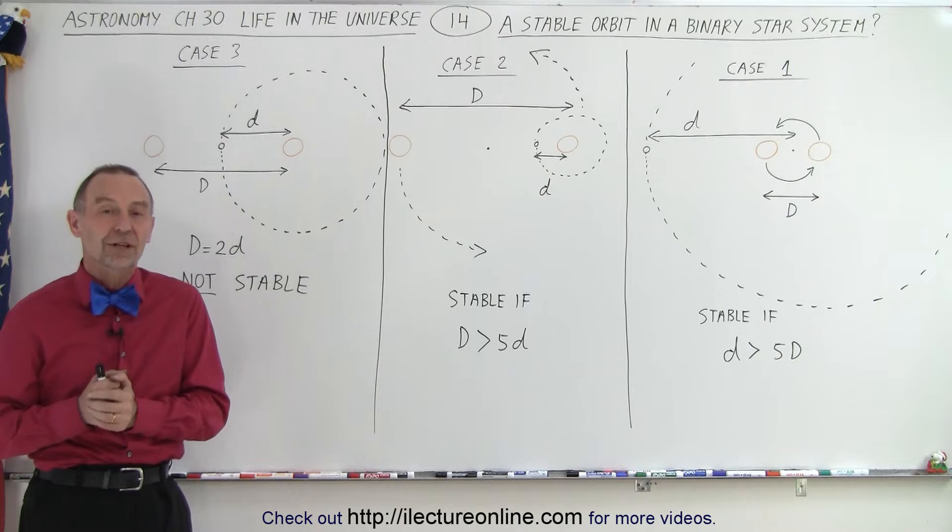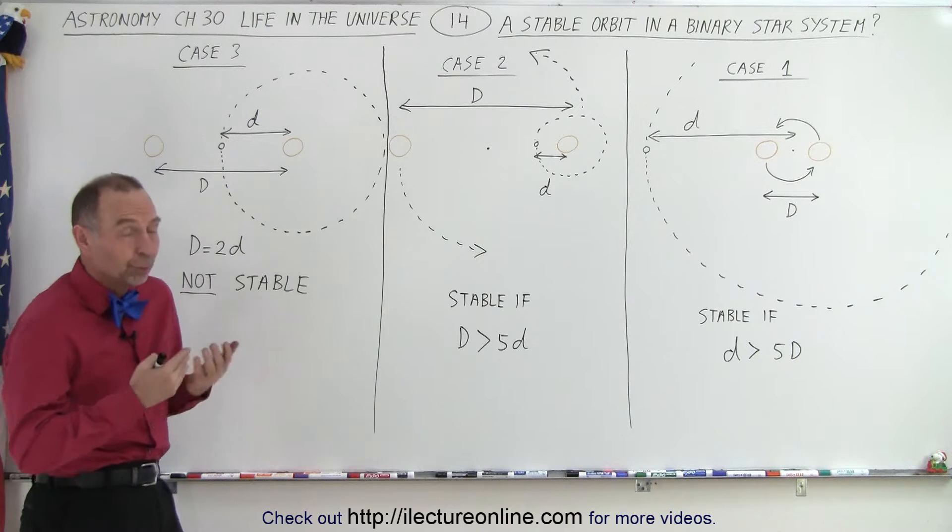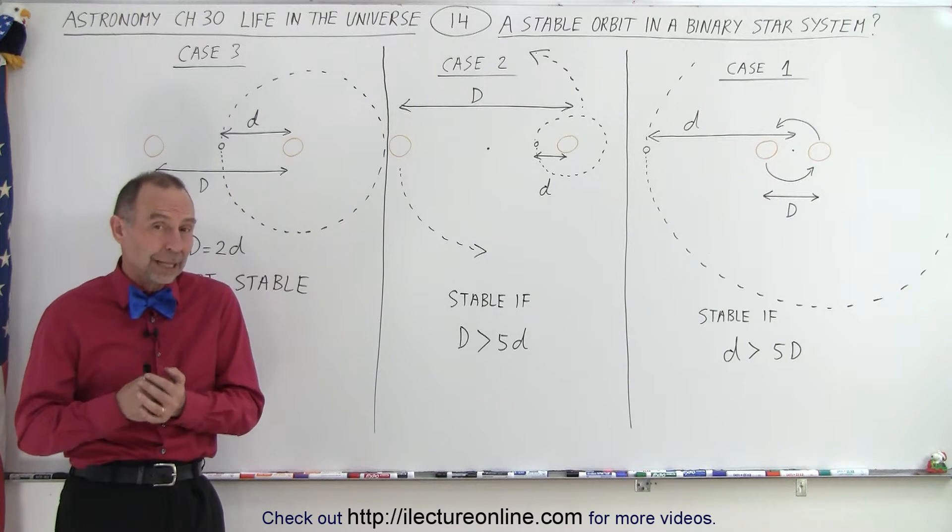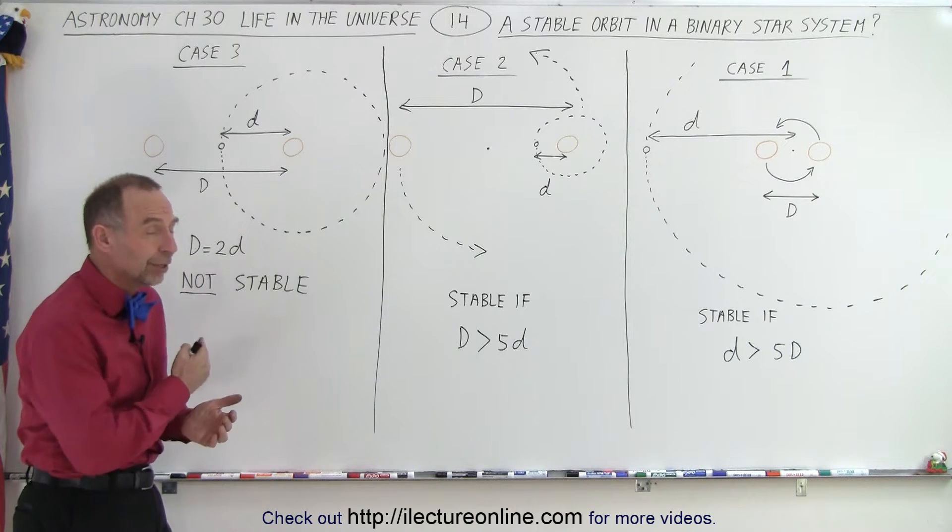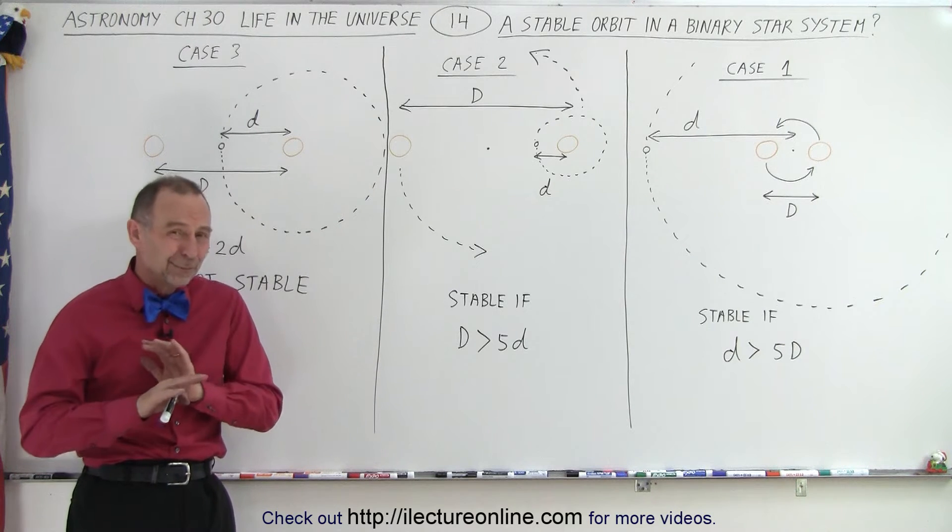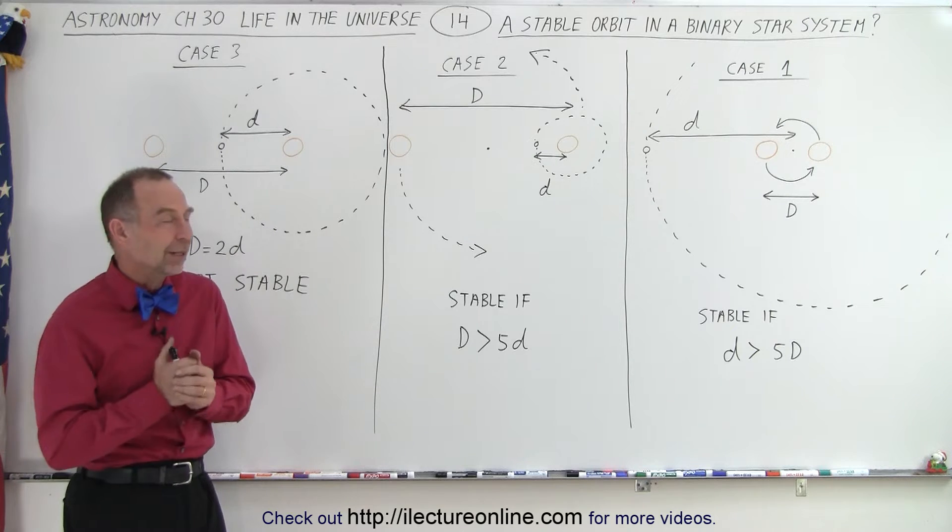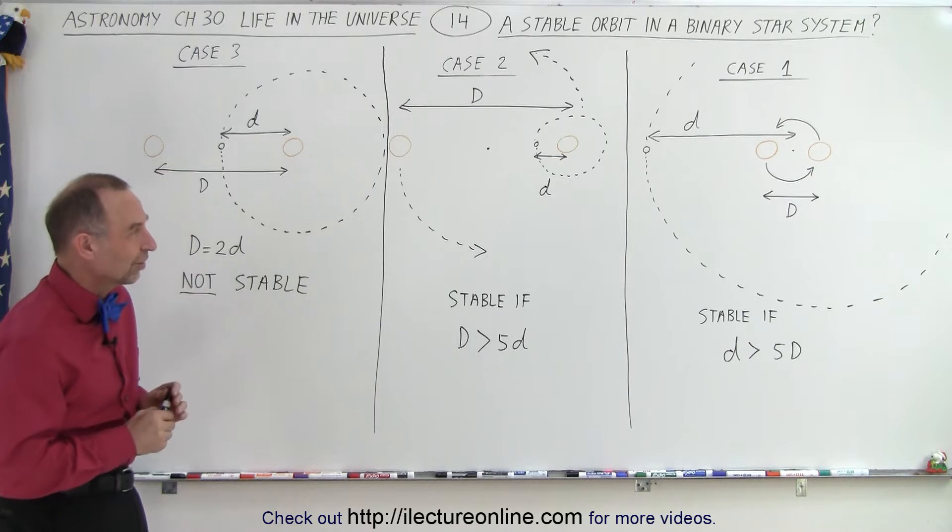Here we have three possible scenarios, two of which could produce a relatively stable orbit for the planet and therefore possibility for life on the planet. And the third example, a third case where we're not likely to find life on that planet. And so let's see what this is.